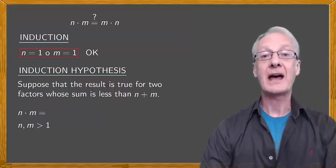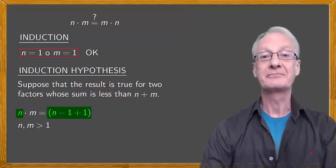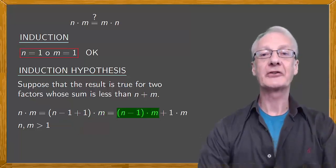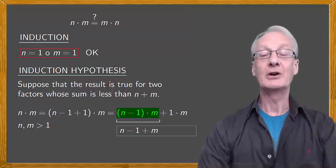If we subtract 1 and add 1 from the first factor, we have n minus 1 plus 1. We still have just n, because we haven't varied the first factor, times m. Now we just apply the distributive property, which is easy to prove, and we'll just assume it, to give n minus 1 times m plus 1 times m. Notice that in the first product, the sum of the factors is n minus 1 plus m, which is 1 smaller than n plus m. Now we can apply the induction hypothesis, which says that these factors commute.